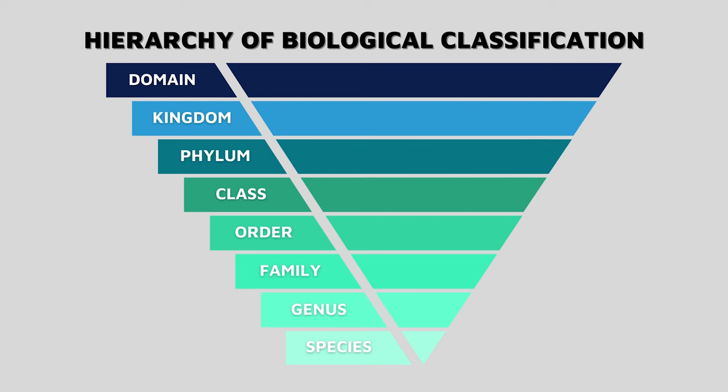The system looks like a reverse pyramid, organized from least specific at the top to most specific at the bottom. One type of organism, like our bush baby — we'll come back to this guy in a bit.